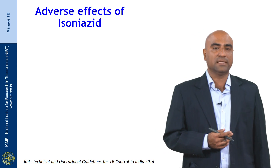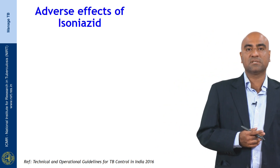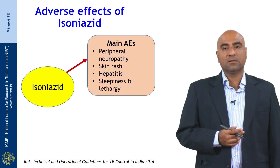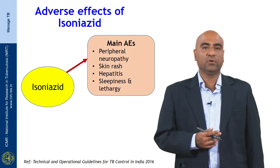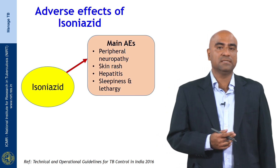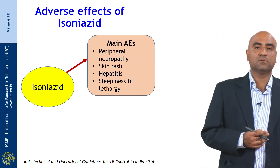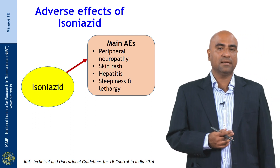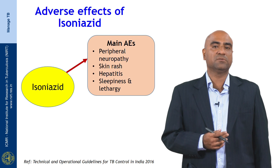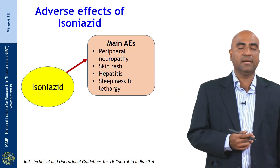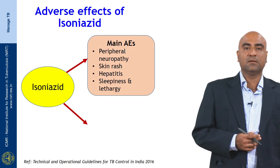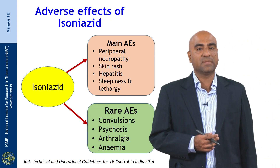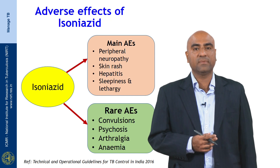Let us take up isoniazid first. The main adverse effect of INH is peripheral neuropathy, which we commonly see in clinical practice. Other side effects are skin rashes, hepatitis, sleepiness, and lethargy. Rare adverse effects associated with INH include convulsions, psychosis, arthralgia, and anemia.